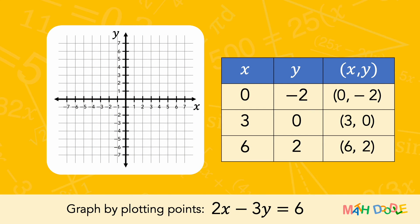Now, let's plot these 3 points in a coordinate system. After plotting these, we can see that the points line up. So, let's draw a line through these points and put arrows on both ends of the line. And this is the line of 2x minus 3y equals 6.